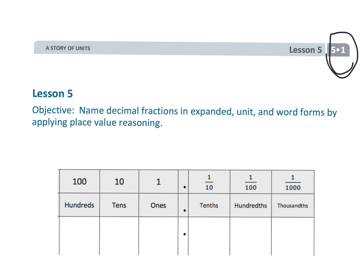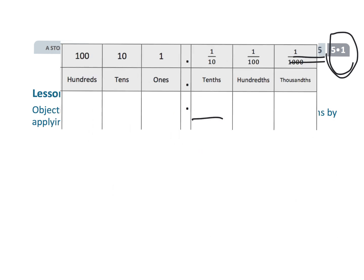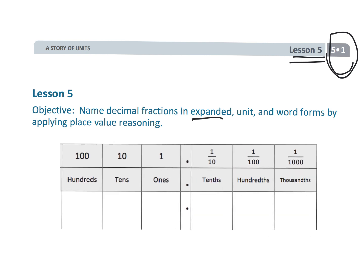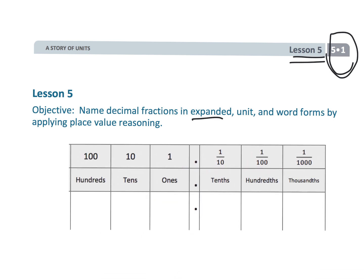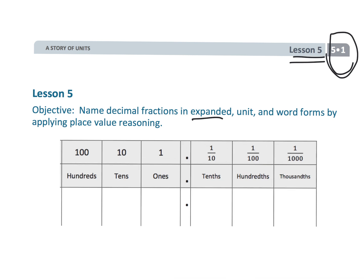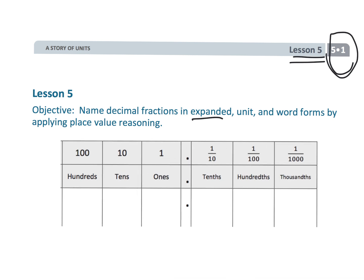All right, this is Grade 5, Module 1, Lesson 5. In this lesson, we're going to be talking about the various forms of expanded notation for writing decimals — using fractions, using decimals, using word form, and all that sort of stuff. This place value chart is going to be crazy important during this lesson. Teachers, make one — maybe make a big one and put it on your wall so that students have ready access to it.